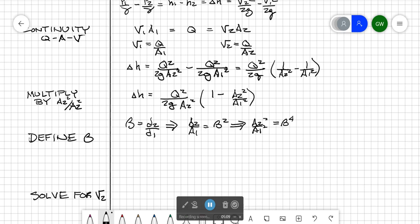We'll now substitute beta to the fourth into our previous equation and get delta h equals q squared over 2g a2 squared times 1 minus beta to the fourth. And if we want to express this in terms of velocity, we can say that is equal to v2 squared over 2g times 1 minus beta to the fourth.